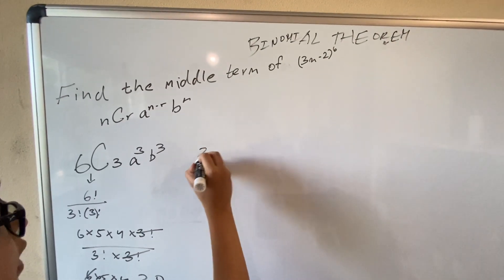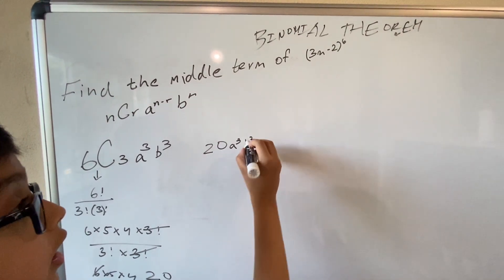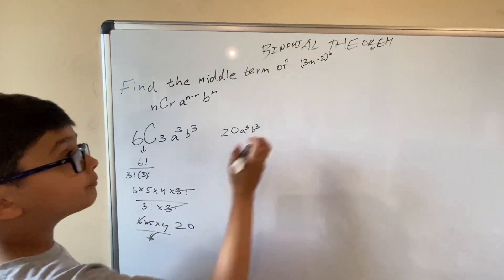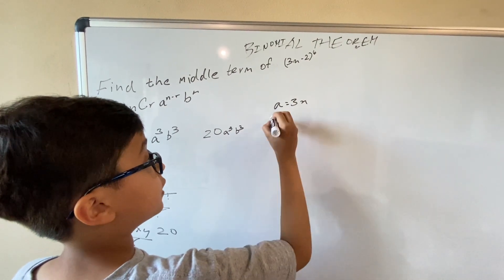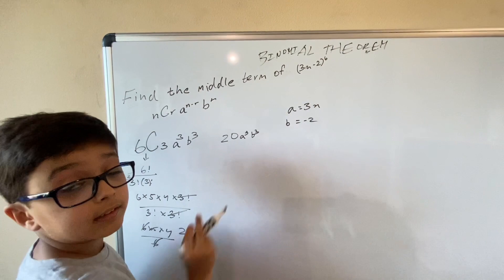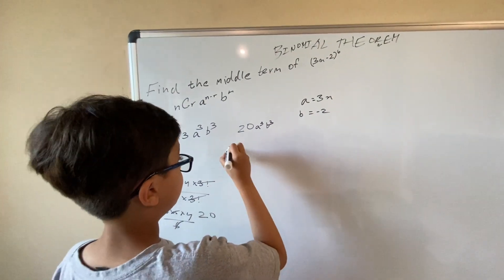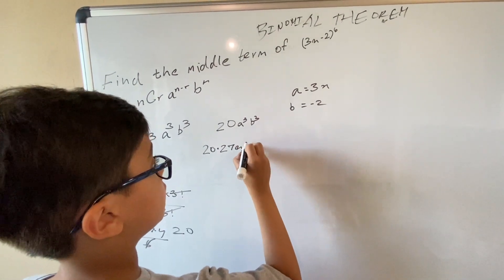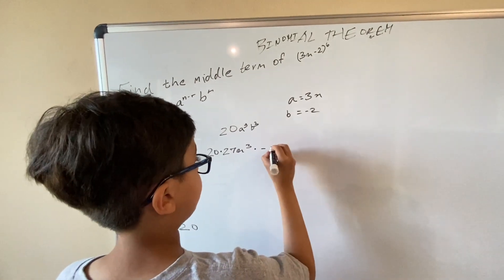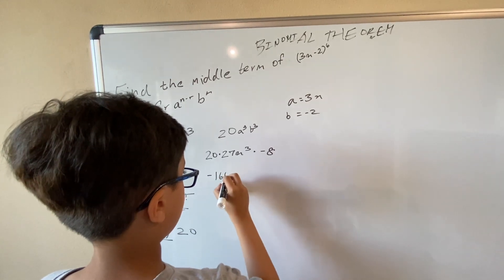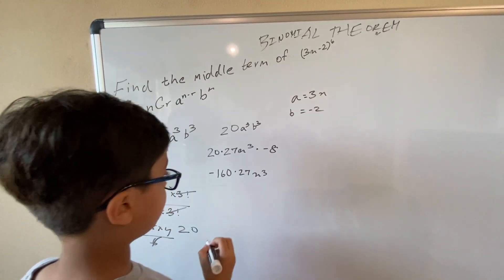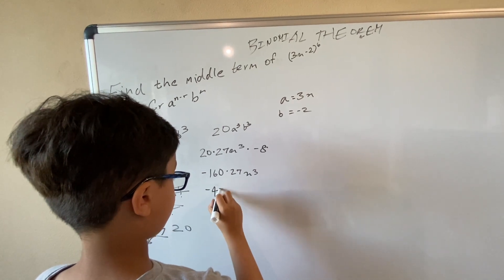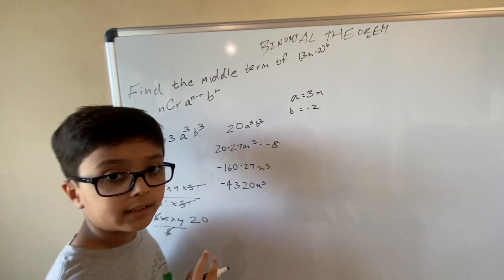So we have 20 · a^3 · b^3. Now substitute: a equals 3x and b equals negative 2. Don't forget it's negative — that's really important. So we do 20 multiplied by (3x)^3 = 27x³, and (-2)^3 = negative 8. That gives us 20 × 27x³ × (-8) = negative 160 × 27x³. Negative 160 times 27 is 4,320. Our answer is negative 4,320x³.